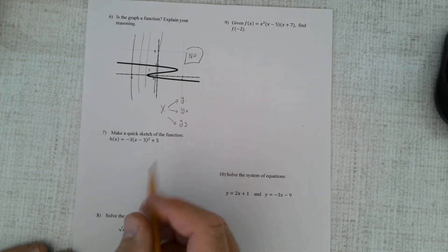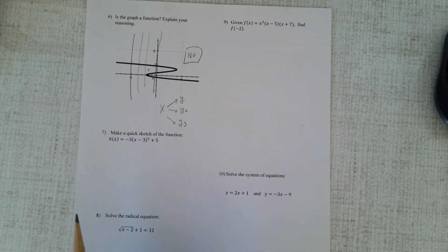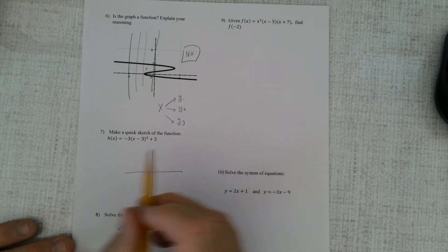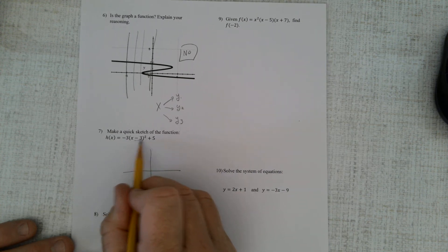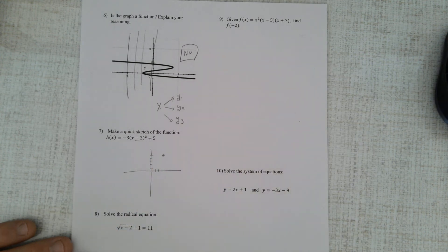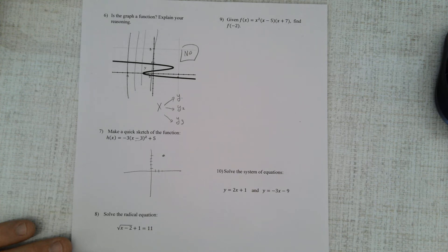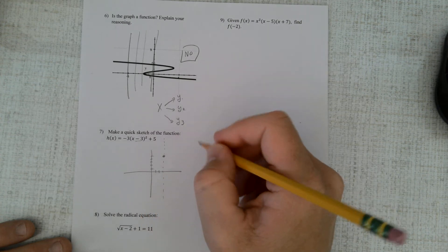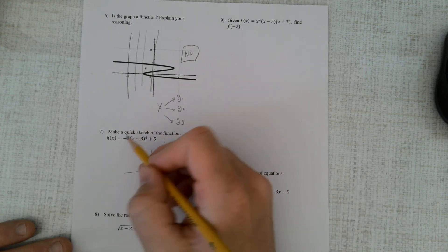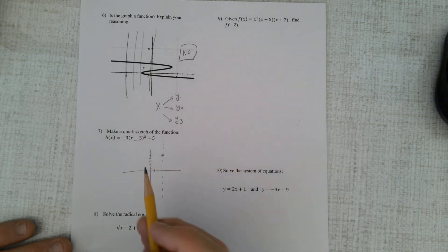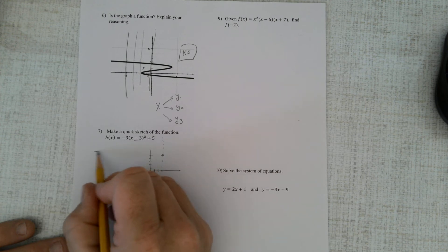Make a quick sketch of this function. Well, when I do this quick sketch, the first thing I want to do is a vertex. Well, I know it's a parabola. And the vertex is (3, 5). So 1, 2, 3. 1, 2, 3, 4, 5. You should be able to pick out that part of the quadratic function. And this is a line of symmetry. So I have a parabola here. And I know it's going down because of this. So it's going down.